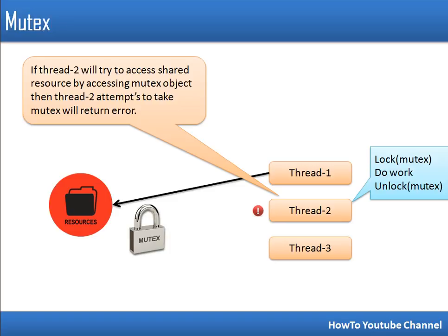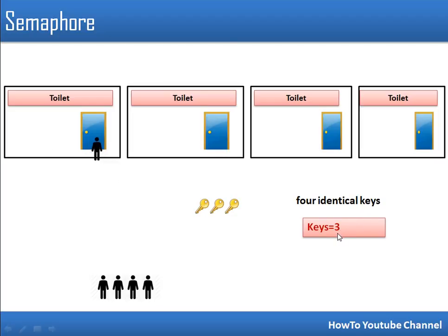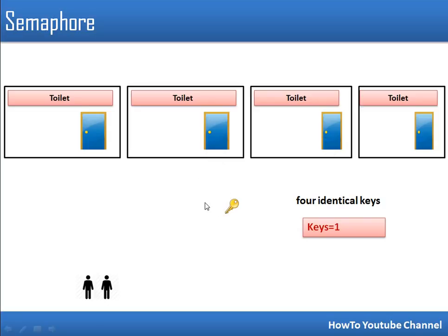Now let's look at semaphore by generalizing our mutex example. Say we have four toilets with four identical keys — one key can be used in any toilet — and we have five persons total. We track the total number of keys available. When a person picks a key and uses a toilet, the count of available keys decreases. After three people have taken keys, only one key remains.